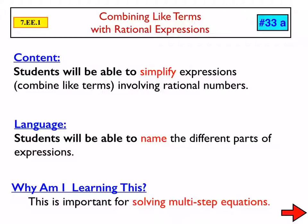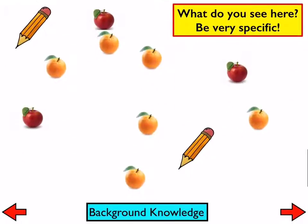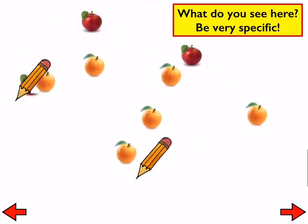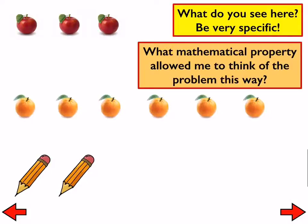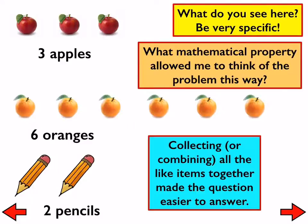As usual, we'll do a little bit of background knowledge here from the things we've been talking about. Yesterday, I gave you a picture like this, and I said, what do you see? We came to the conclusion that there were three apples and six oranges and two pencils in that picture. The commutative property allows us to rearrange things, and when we do that, it's much easier to figure out what we have from a picture like that.